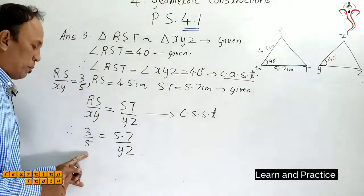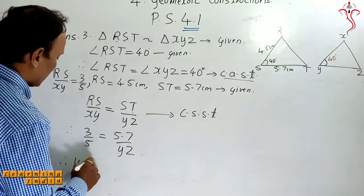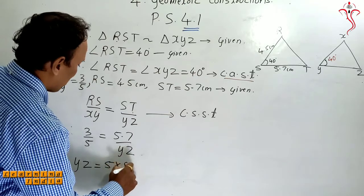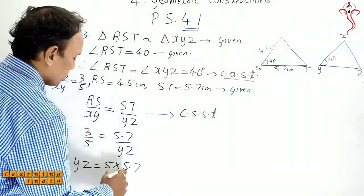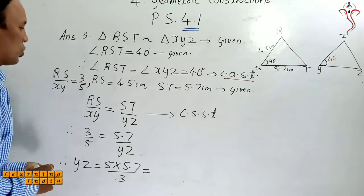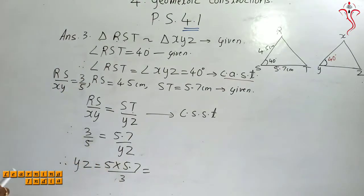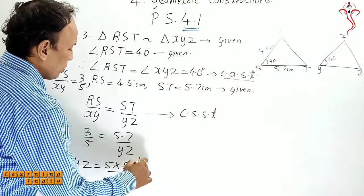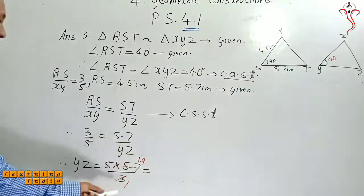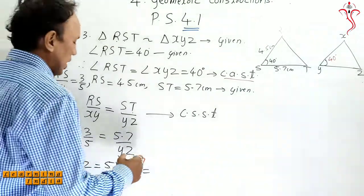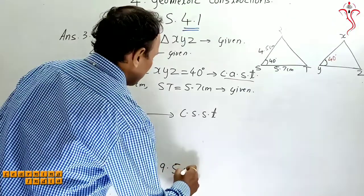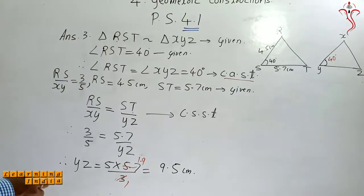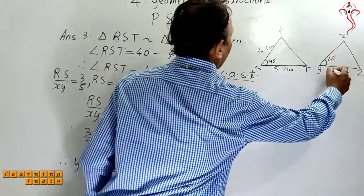So again we will do cross multiplication. So what is the value of YZ? It is equal to 5 multiplied by 5.7 divided by 3. Both are going in the table of 19: 3 times 19 is 57. So I write here 1.9, so 5 into 1.9 is 9.5. So I can write here 9.5 cm.